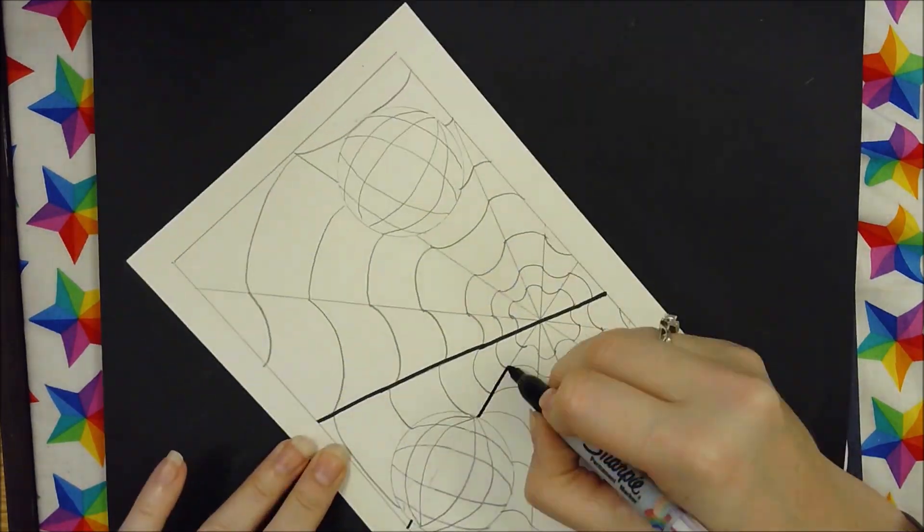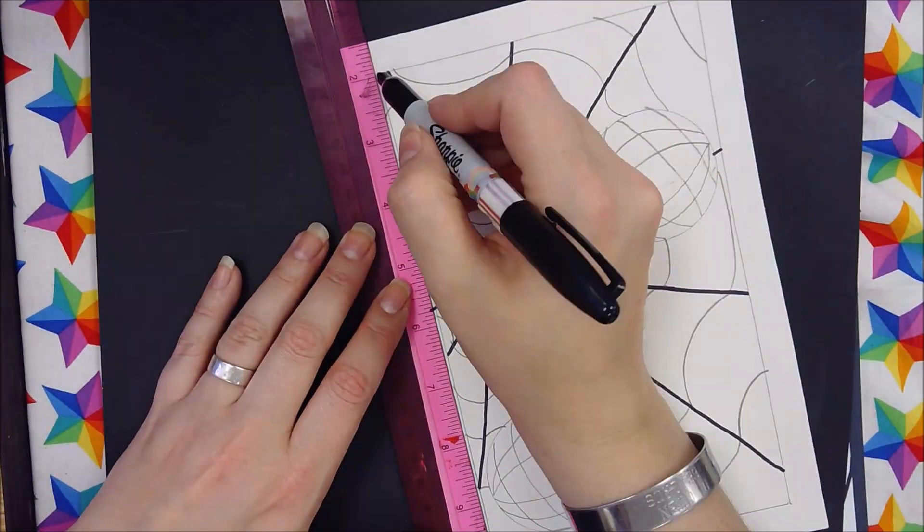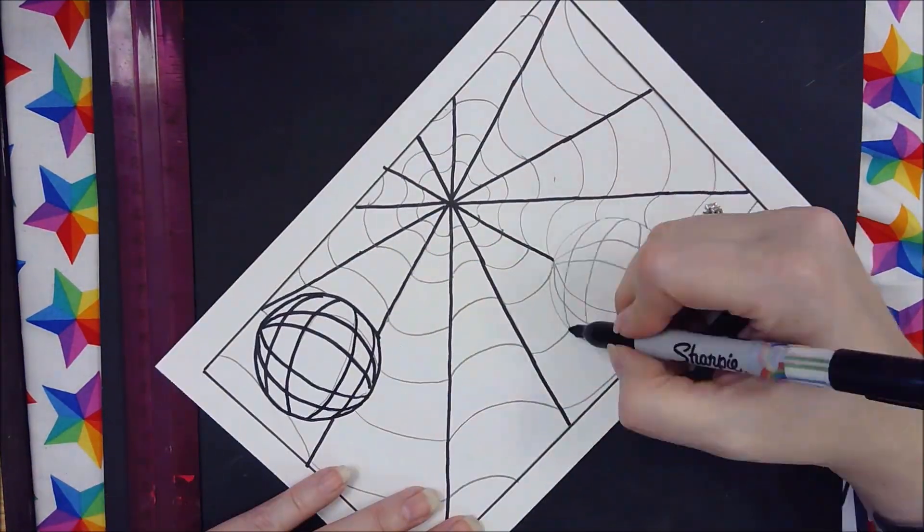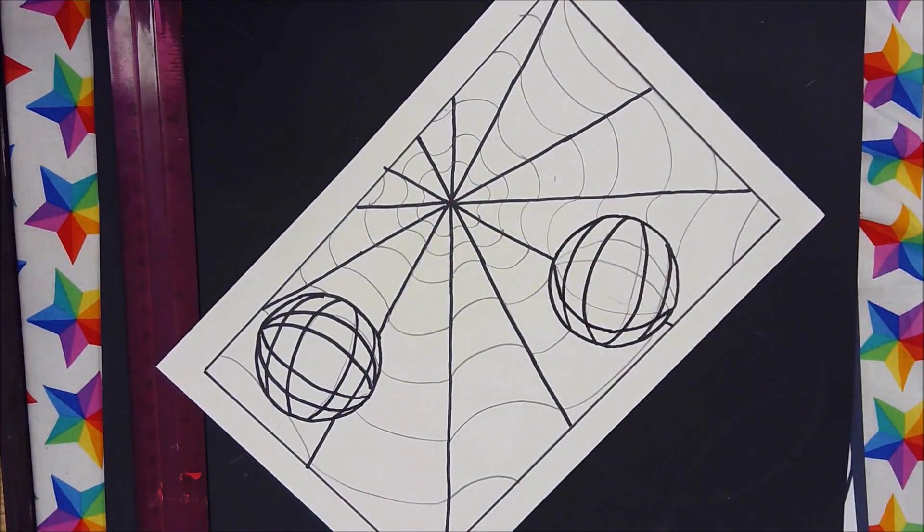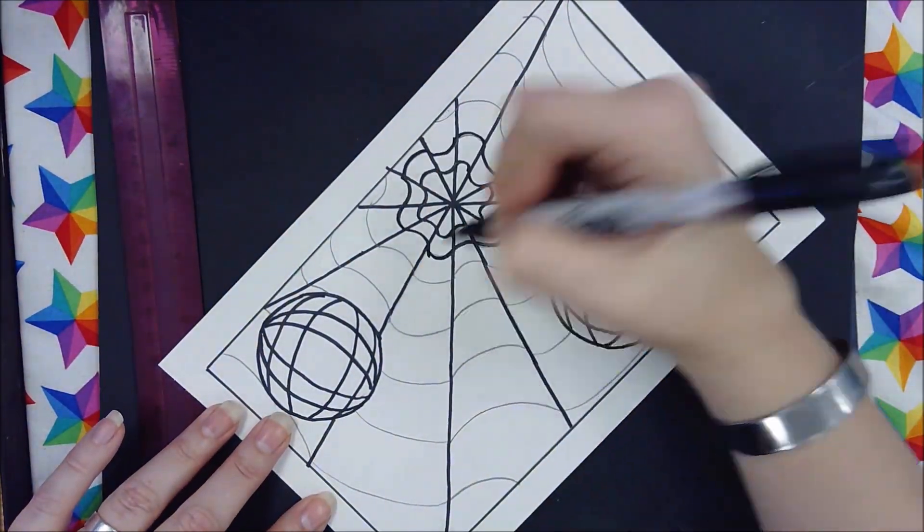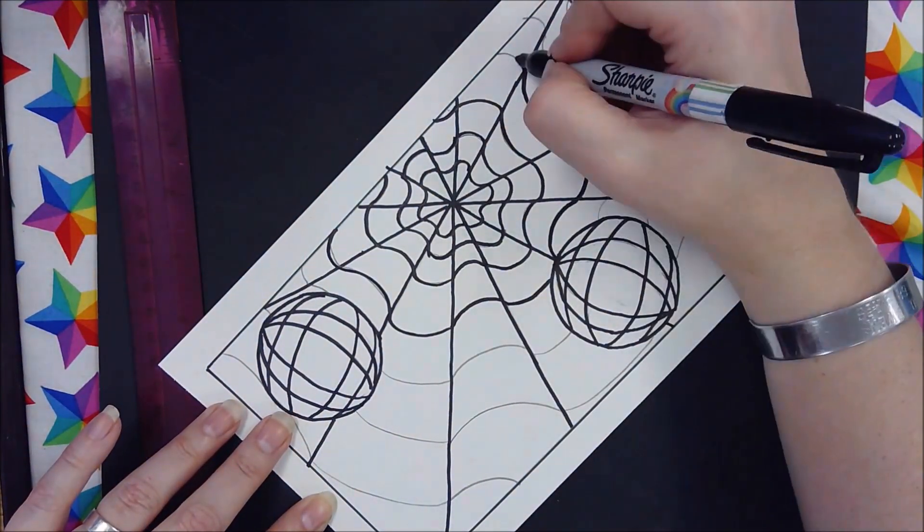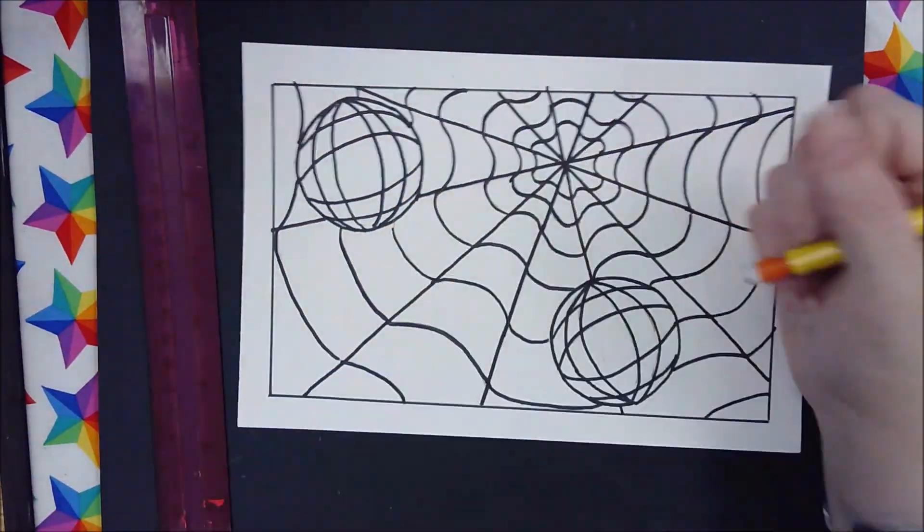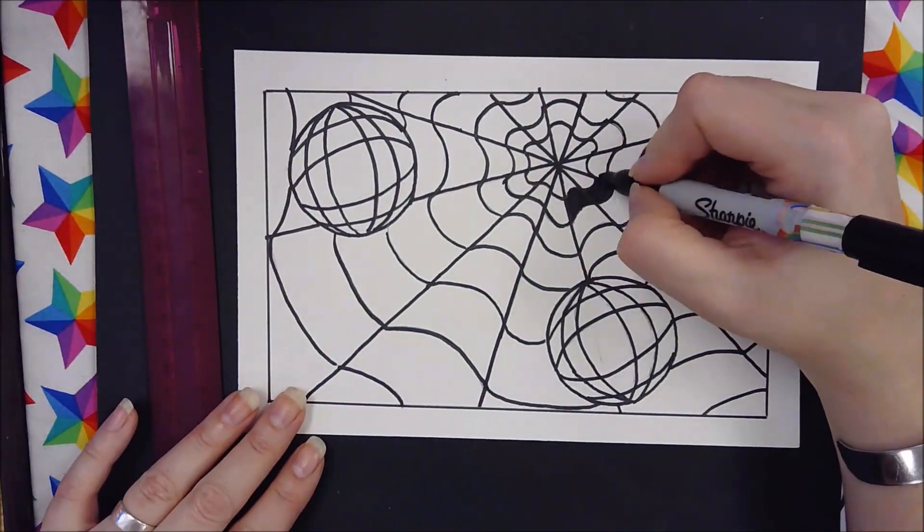Next, you are going to need a sharpie. You are going to sharpie every single line, any line you've created. You're going to sharpie. This is going to give you a clean, crisp work of art and it's going to make it look all that much better. Continue sharpening until every single line has been sharpied. Erase afterwards.